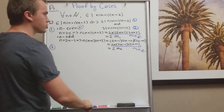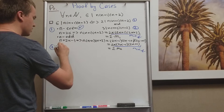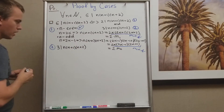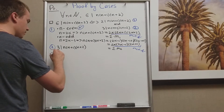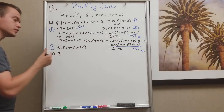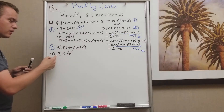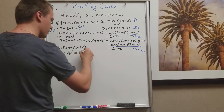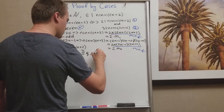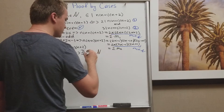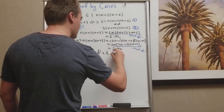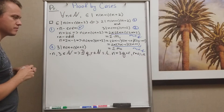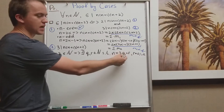For the second statement, I want to show the whole product is divisible by 3. I'm going to take my number n and apply the division algorithm with divisor 3. This means there exist unique q and r, natural numbers, such that n equals 3q plus r, where r can be either 0, 1, or 2. We're going to use proof by cases, and for every n we have only 3 cases for r: 0, 1, and 2.